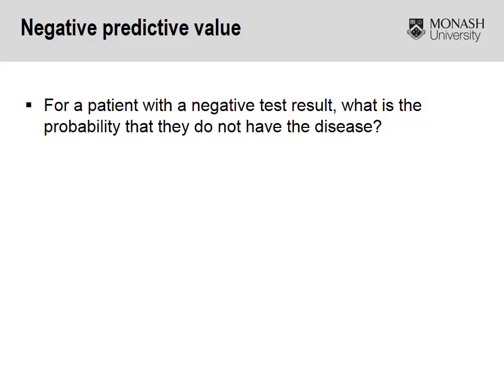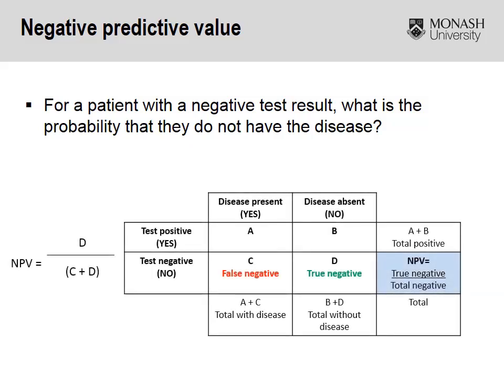Negative predictive values are the flip side. For a patient with a negative test result, what's the probability that they do not have the disease? Once again we use our 2x2 table, and in this case we're focusing on our true negatives — disease absent or present, test positive or test negative. To calculate our negative predictive value, we look at all those who tested negative and don't have the disease, divided by all of those who tested negative.